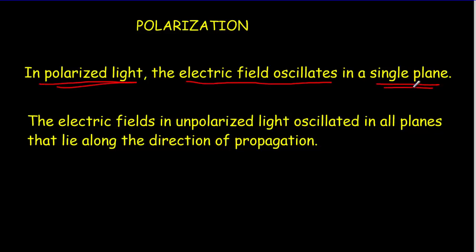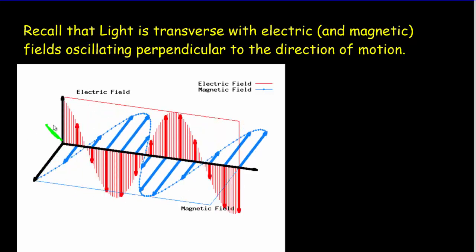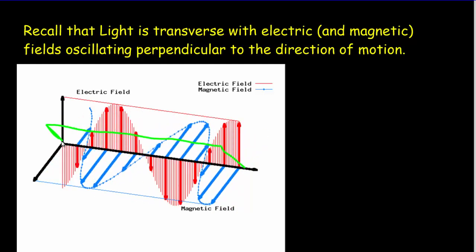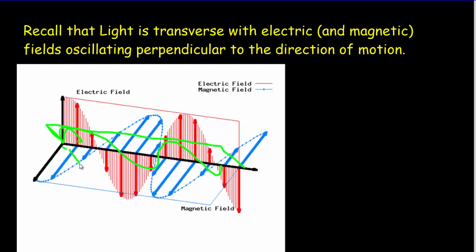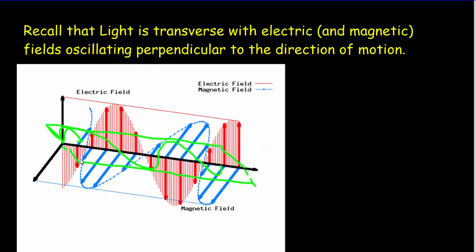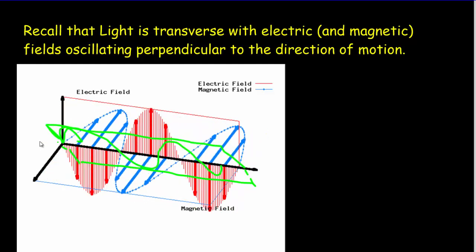That plane could be the horizontal plane, the vertical plane, or any plane in between. For unpolarized light — and most light is unpolarized, like light from the sun or from lamps — it's going to oscillate in all the planes that lie along the direction of propagation. We can have any plane between the horizontal and the vertical as a possibility for polarization. If it's unpolarized light, the electric field oscillations are in all of these different planes between vertical and horizontal.